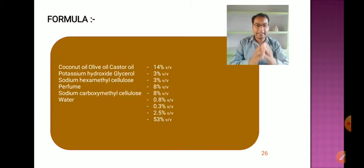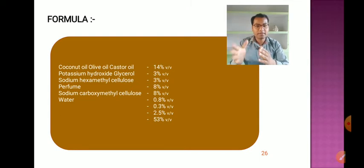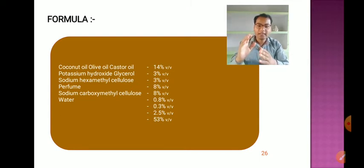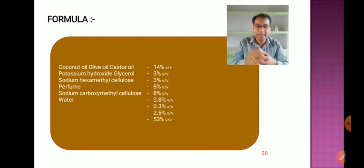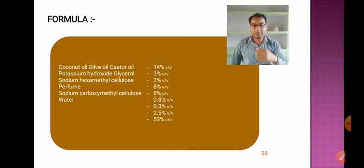Here is a formula to prepare shampoo for hair. The main ingredients used are coconut oil, olive oil, castor oil, potassium hydroxide, glycerol, sodium hexamethyl cellulose, perfume, sodium carboxymethyl cellulose, and water.